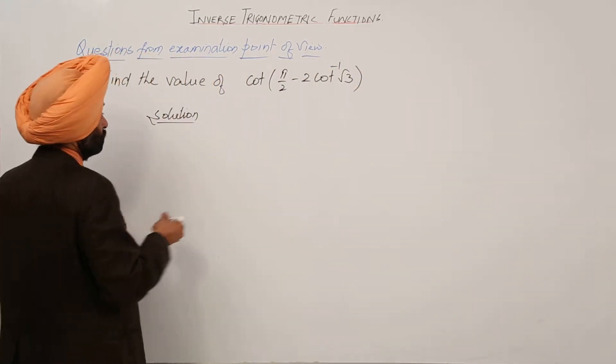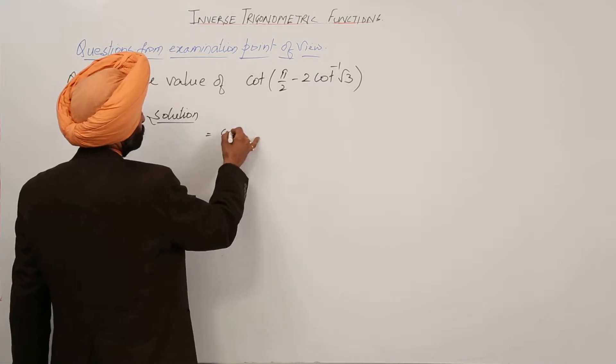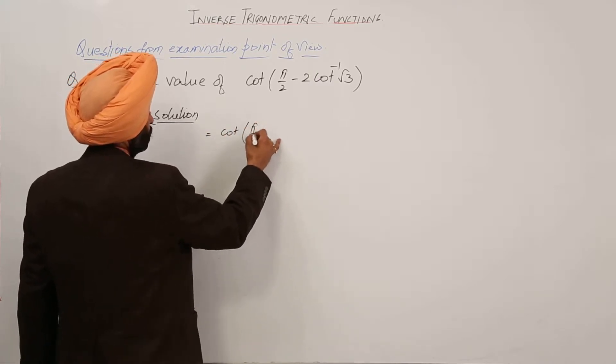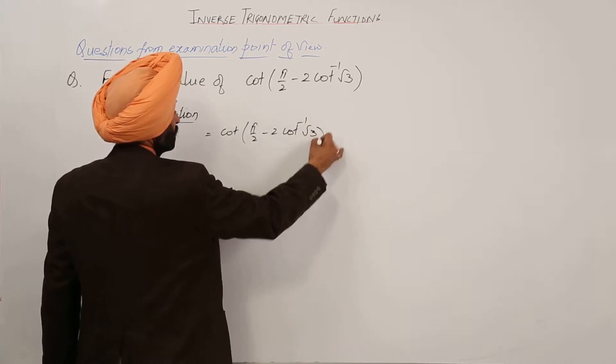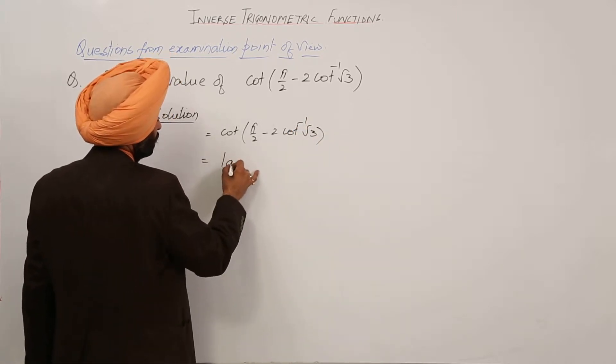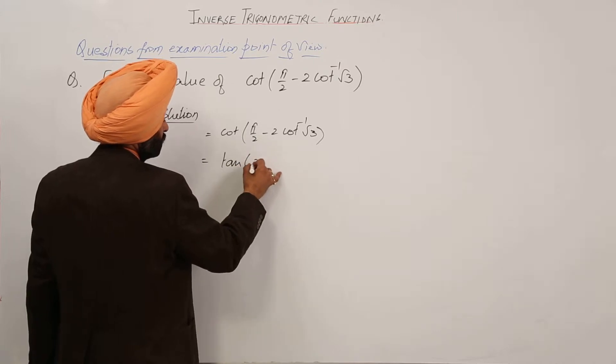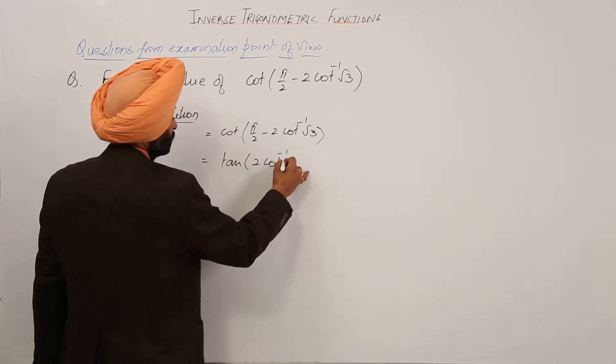So, now it becomes cot(π/2 - 2cot⁻¹√3). This becomes tan(2cot⁻¹√3).